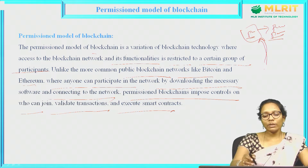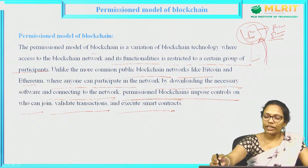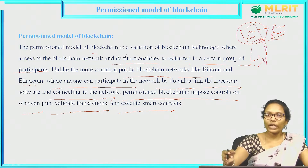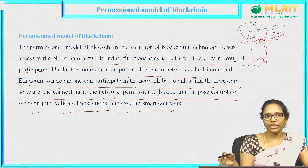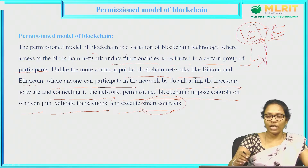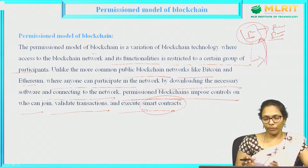Whereas in a permissioned blockchain, we need to take permission and the central authority will give permission to specific persons — who can read the transaction, who can validate the transaction, and who can execute the smart contract. All these will be decided by the central authority. The central authority may be a single person or a group of persons in the permissioned blockchain.